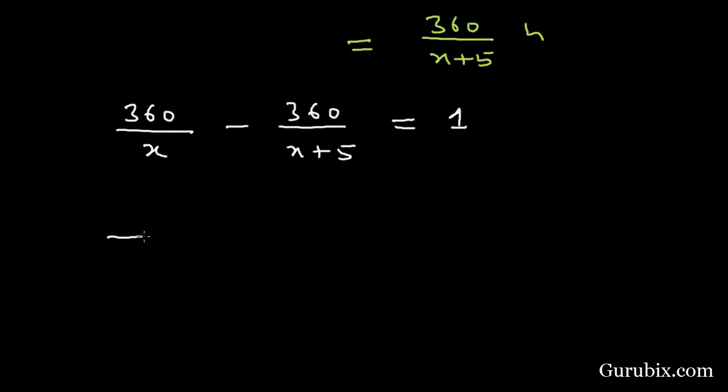Now we shall solve this equation by taking LCM. Here we have x times x plus 5. We shall take common 360, and it is x plus 5 minus x. Here we have 1 over 1. We can cancel out x with minus x.